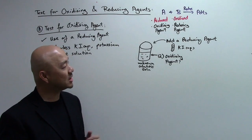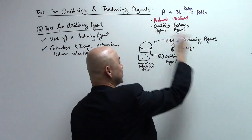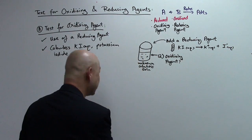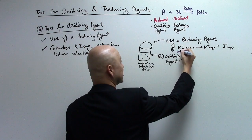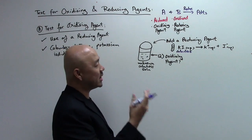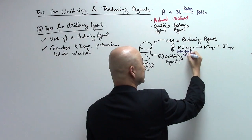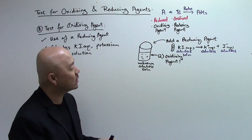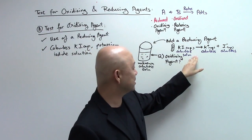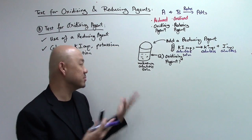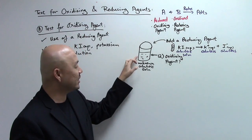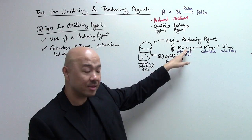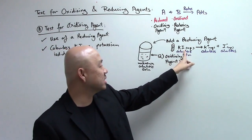Potassium iodide is a salt solution, so it dissociates into its ions before you add it. Potassium iodide solution is itself colorless, and both its ions are colorless. When you add colorless potassium iodide solution into the unknown colorless solution, the mixture will still be colorless. However, if there is an oxidizing agent in the unknown solution, it will react with the potassium iodide in a redox reaction.